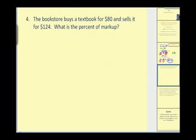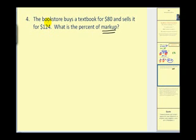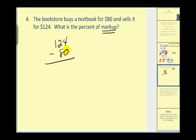Now let's look at a couple of applications. When we switch to applications, we read the problem and translate it into a simple percent question. The bookstore buys a textbook for eighty dollars and sells it for one hundred twenty-four dollars. What is the percent of markup? First, what is the markup? One hundred twenty-four dollars minus eighty dollars gives us a markup of forty-four dollars. So the question becomes: forty-four dollars is what percent of eighty dollars?